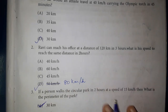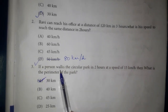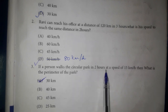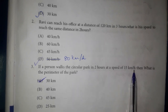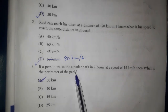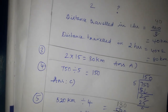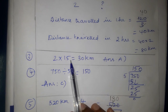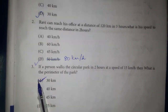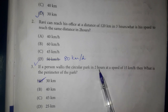Third one. If a person walks a circular park in 2 hours at a speed of 15 km per hour, then what is the perimeter of the park? 2 into 15 is 30 km. Answer is 30 km.